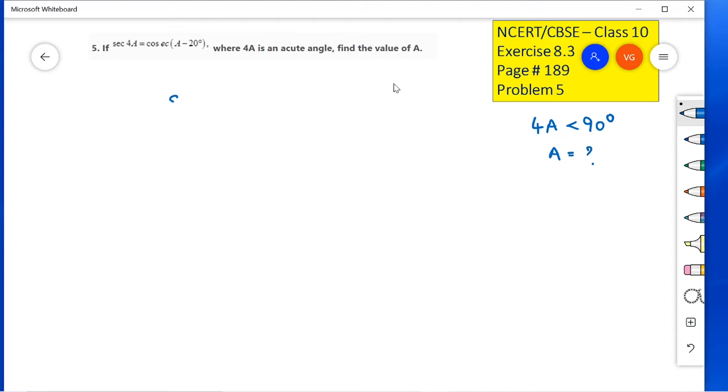So, the given statement is: secant 4A equals cosecant (A minus 20 degrees).